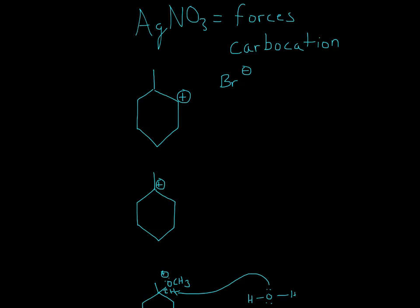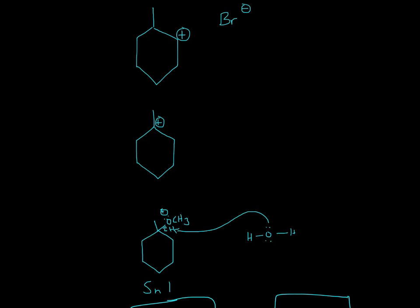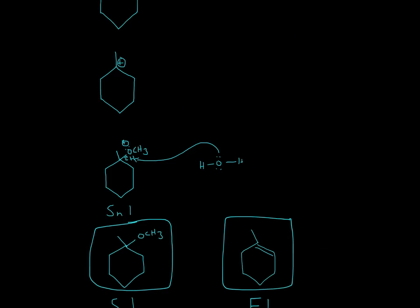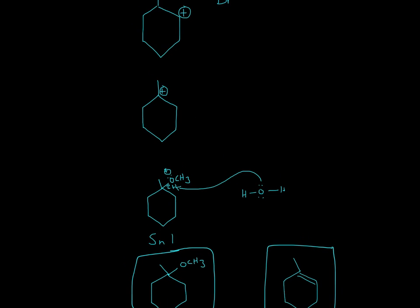So there will be a hydride shift, and the carbocation will go over there. And then what will happen is the second part. CH3OH will come by and attack this carbocation. So that's why we have OCH3 right here. And that will actually be a plus charge.